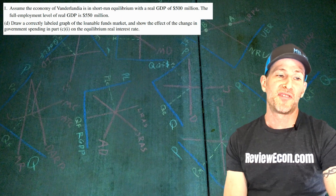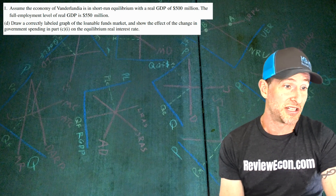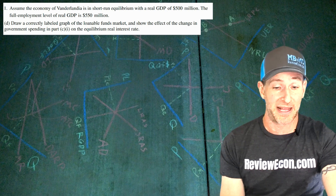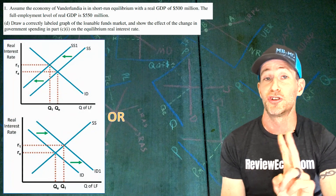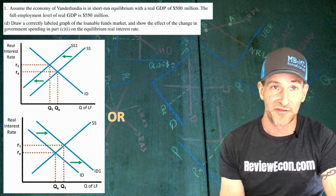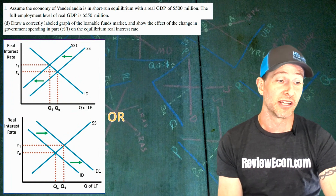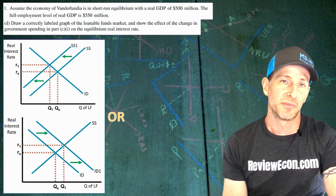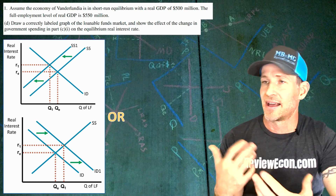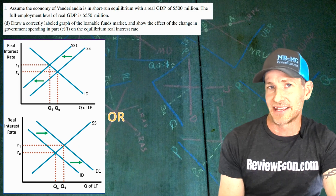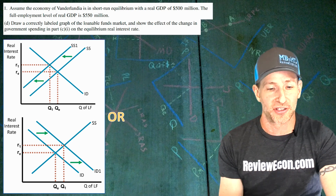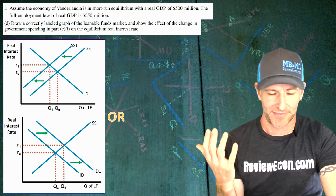We're now going to draw a loanable funds graph to show the impact of the increase in government spending on the equilibrium interest rate. There are two possibilities: I prefer decreasing the supply of loanable funds, which increases the equilibrium real interest rate. But a perfectly acceptable answer is also to rightward shift the investment demand curve. Either supply or demand labels should be fine. That's the impact of crowding out, essentially, and either approach will be acceptable.